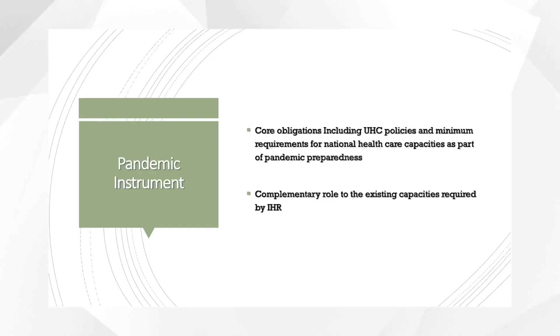This can be complemented by preparing hospitals and more specialised services to deal with acute care needs during outbreaks. So the pandemic instrument could therefore establish core obligations, including UHC policies, and minimum requirements for national healthcare capacities as part of pandemic preparedness. This would complement core public health capacities that are already required by the international health regulations.